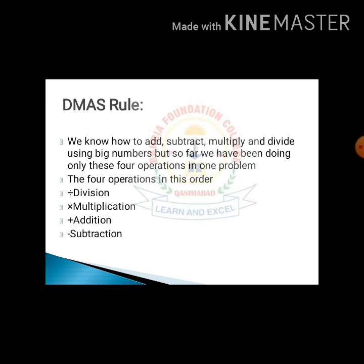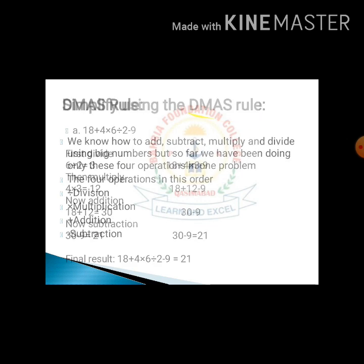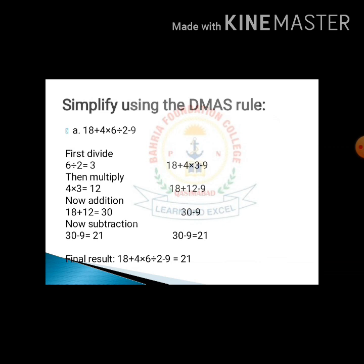It tells us the ordering of solving problems to get the accurate result. Now here is a problem which I take from the class 5 mathematics book. The problem is 18 plus 4 multiplied by 6 divided by 2 minus 9.